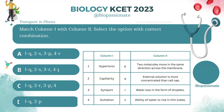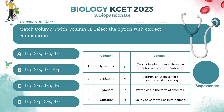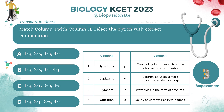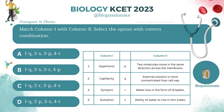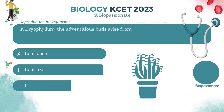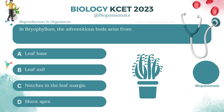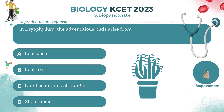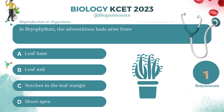Match column 1 with column 2 and select the option with the correct combination. Answer: Option A. In Bryophyllum, the adventitious buds arise from which part? Answer: Not just the leaf margin.